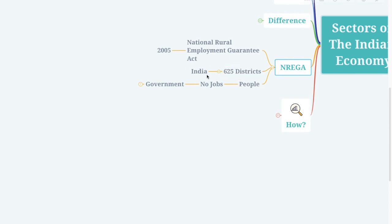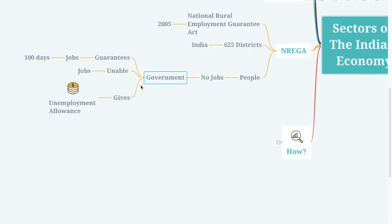Let's move on to the National Rural Employment Guarantee Act, started in 2005. About 625 districts in India fall under this category. The government provides job guarantees for 100 days for people with no jobs, and if the government is unable to provide jobs, it gives an unemployment allowance to these people.